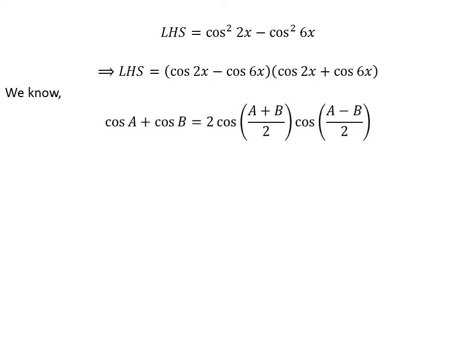We know the famous trigonometry identity: cosine of a plus cosine of b is equal to 2 times cosine of half of (a plus b) times cosine of half of (a minus b).